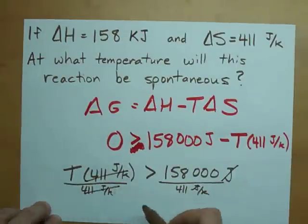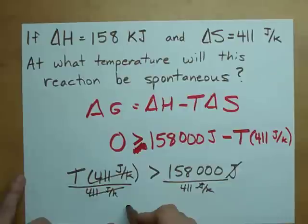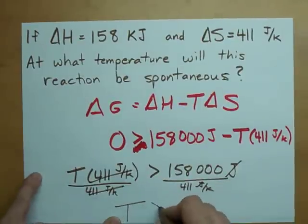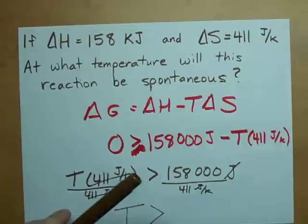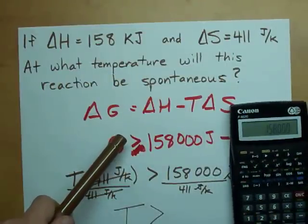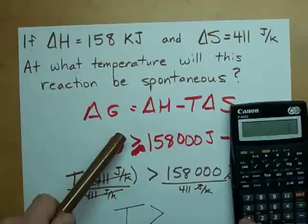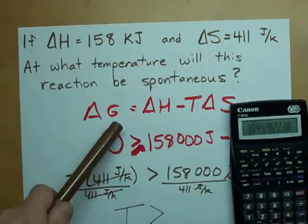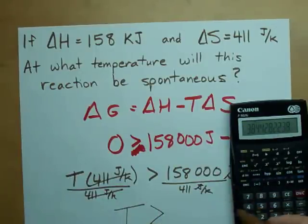These two cancel each other out entirely and you end up with T must be greater than, I'm going to need a calculator for this one, 158,000 divided by 411, 384.